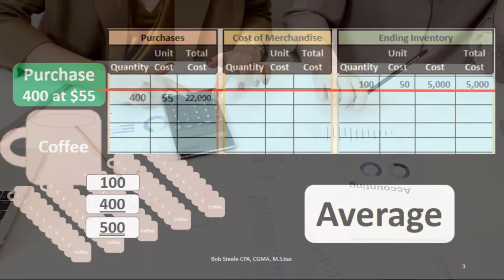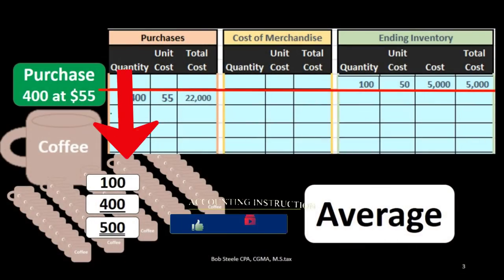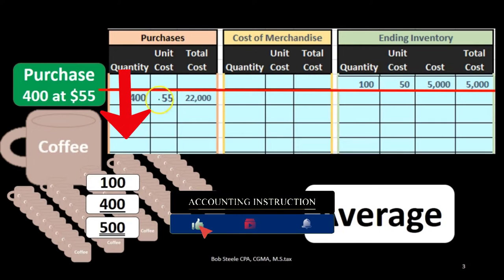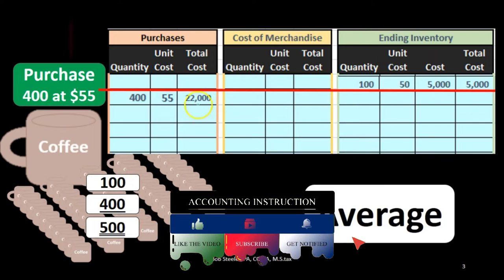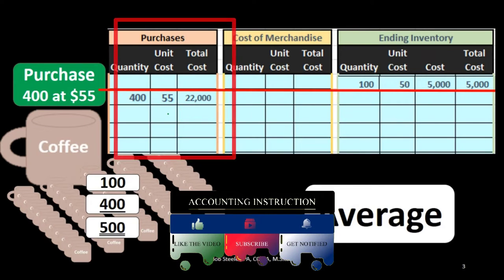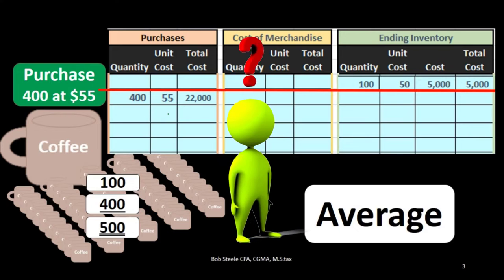If we use a cost flow assumption, we don't know exactly which mug we're going to sell. Question then is, are we going to cost the sale of that mug at $50 or $55 when we sell it? Under an average method, we'll say, how about neither? Why don't we take the average of the two?